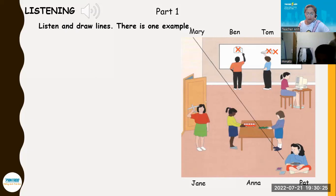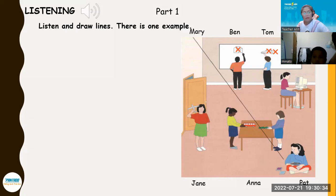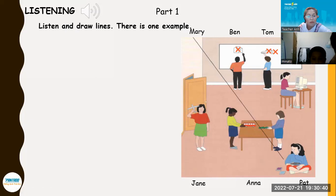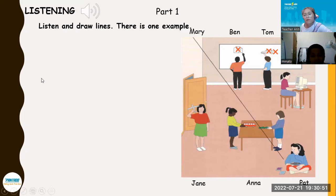Four. Look at Anna. Where is she? She's standing by the door. Is she wearing a red T-shirt? Yes, she is. And she's got a toy plane. Five. Can you see Pat? Yes, I can. She's working. What's she doing? She's working at the computer. Oh yes, she likes that. I can listen.